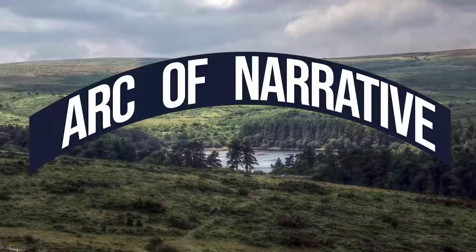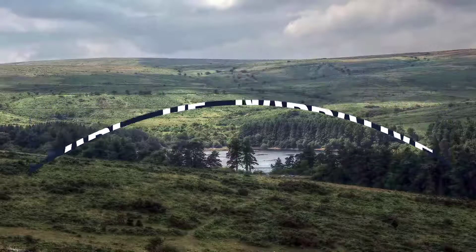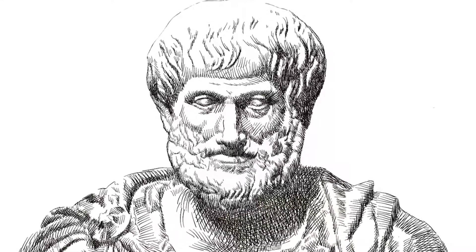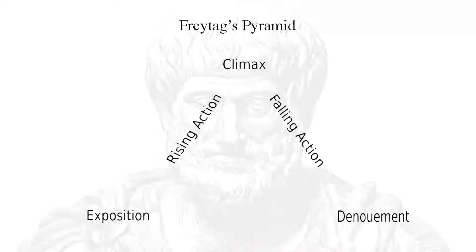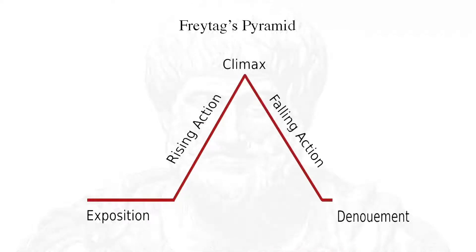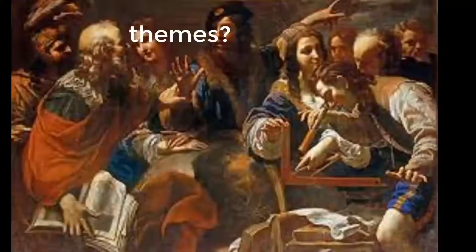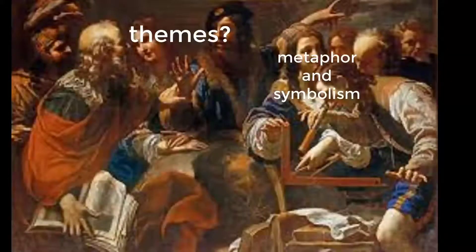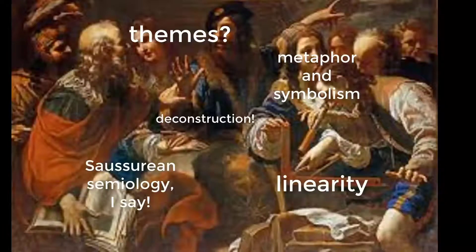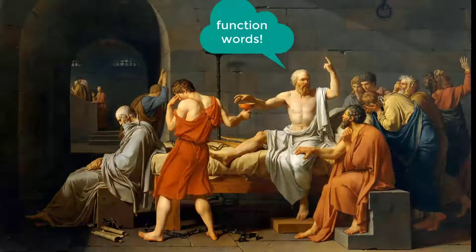Welcome to the arc of narrative. Since Aristotle, scholars have argued that stories share a basic structure. Authors need to set the stage at the beginning, have some kind of climax in the middle, and then tie everything together at the end. The problem is, no one can agree on how to identify or measure these dimensions. We wondered if we could see this structure by looking at those small, hidden function words instead of paying attention to the themes of stories.